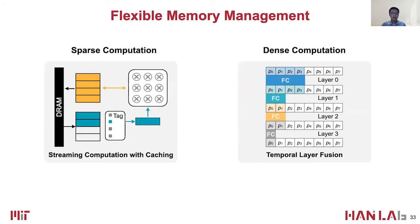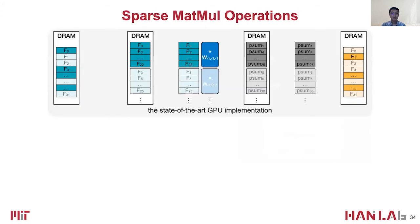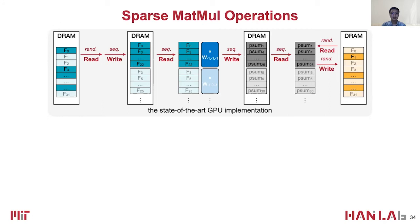Now we look into the memory management in Point Tech. Point cloud networks consist of both sparse computation and dense computation. First, Point Tech supports stream sparse computation with caching. The state-of-the-art GPU implementation will first gather all required input feature vectors, concatenate them as contiguous matrices, then apply matrix-matrix multiplication to calculate partial sums, and finally scatter to corresponding outputs. Each step requires independent read-write access to the DRAM.